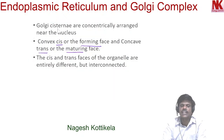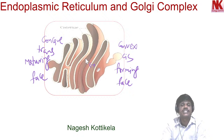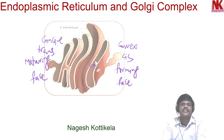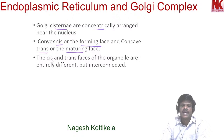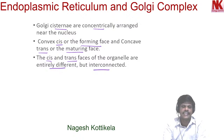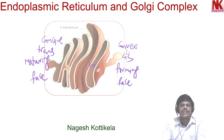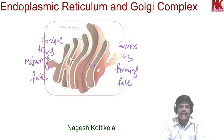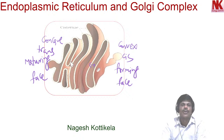Golgi cisternae are concentrically arranged near the nucleus. The cis and trans faces of the organelle are entirely different but they are interconnected. On the cis side, the vesicles receive proteins formed from the endoplasmic reticulum, and through the trans phase, they are released out. This is how the Golgi apparatus functions.